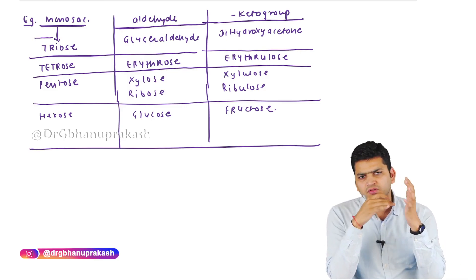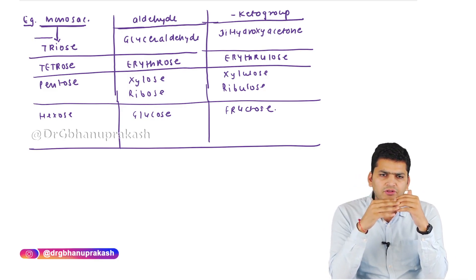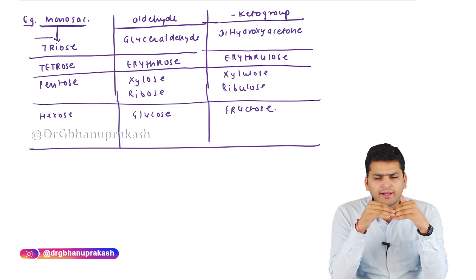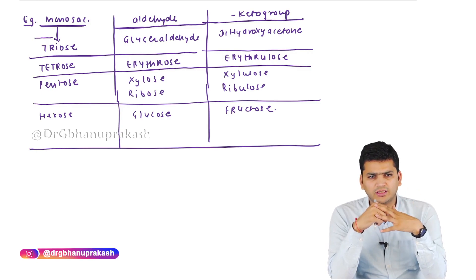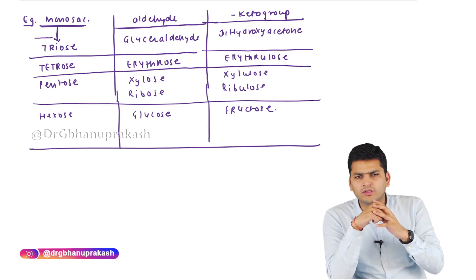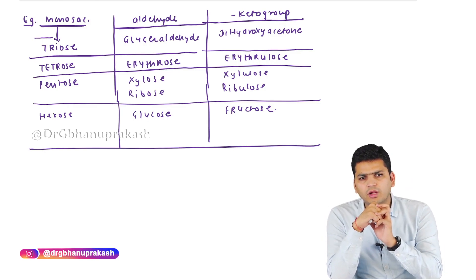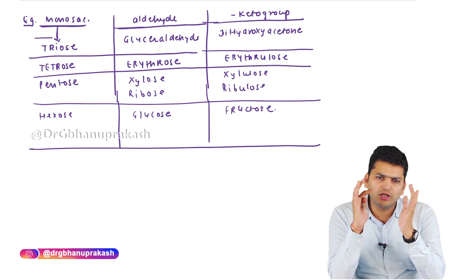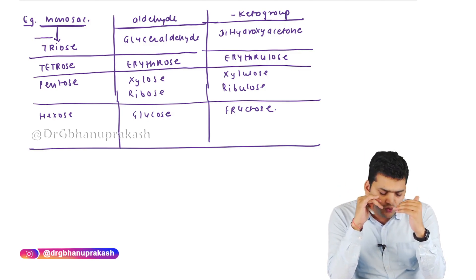We have discussed isomerism in a separate video. Glucose, mannose, and galactose are all types of isomers — they are epimers of one another. To convert glucose to mannose, rotate the OH of glucose at carbon number two. To convert glucose to galactose, rotate the OH at carbon number four.